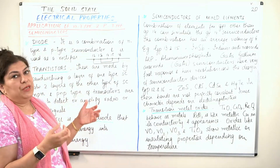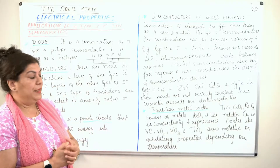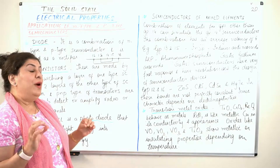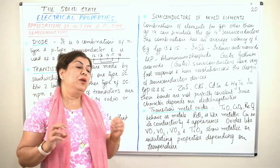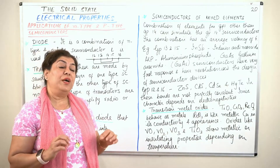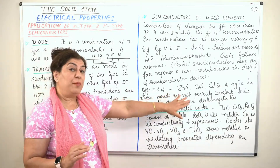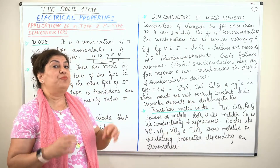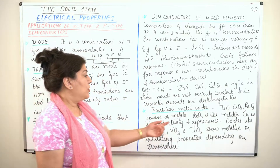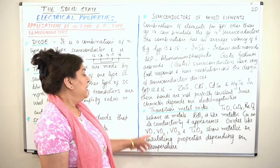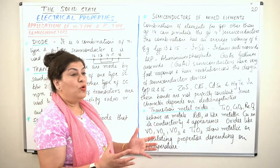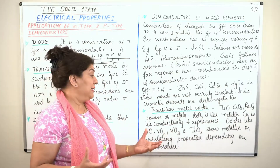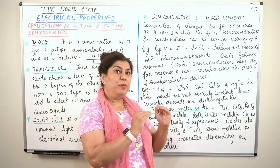Now, transition metal oxides sometimes show conductivity as good as metals. We are now talking of compounds that can act as proper conductors. Titanium oxide (TiO), chromium oxide (CrO2), and rhenium oxide (ReO3) actually act as metals — not as semiconductors, but proper metals.